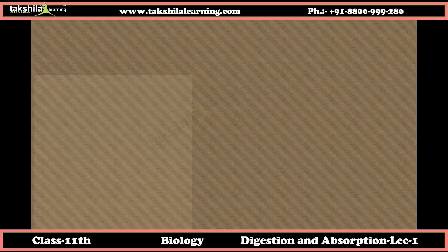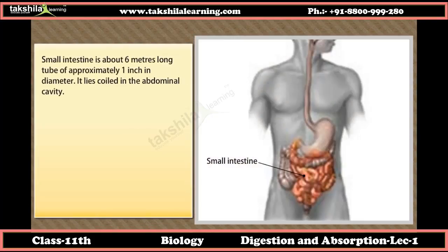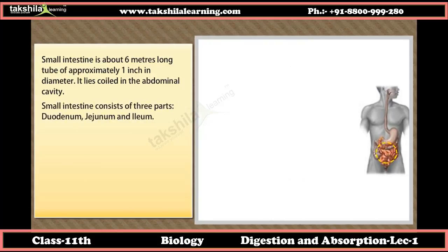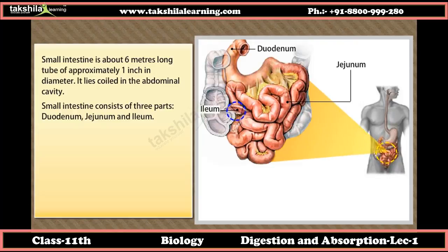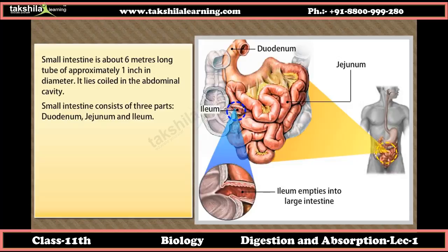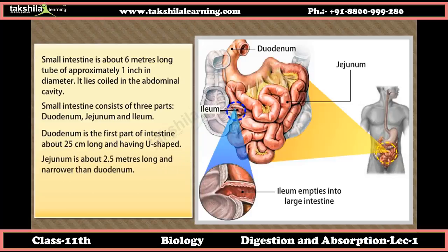The small intestine is about 6 meters long and approximately 1 inch in diameter, lying coiled in the abdominal cavity. It consists of three parts: the duodenum, which is the first part about 25 centimeters long and U-shaped; the jejunum, about 2.5 meters long and narrower than the duodenum; and the ileum. The jejunum and ileum do not have a clear-cut separation.